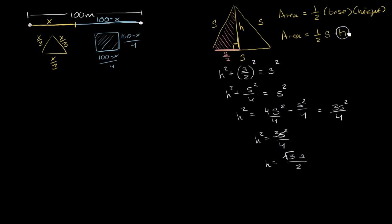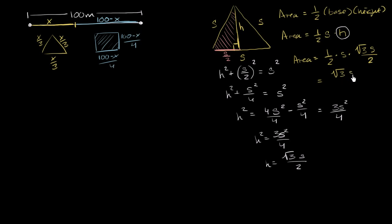Substituting back, the area equals 1/2 times s times h, which is 1/2 times s times (√3 · s)/2, giving us (√3 · s²)/4. So this is the area of an equilateral triangle as a function of the length of its sides.